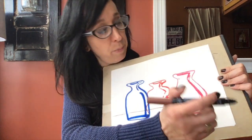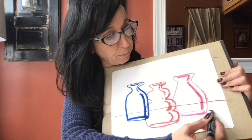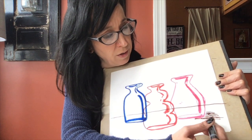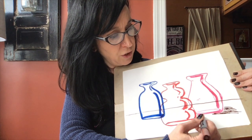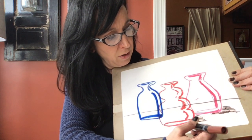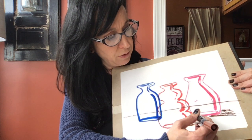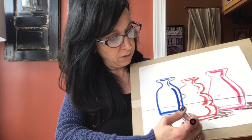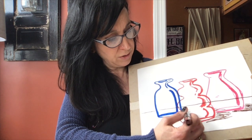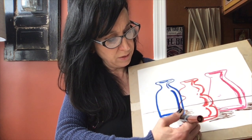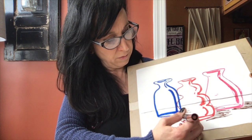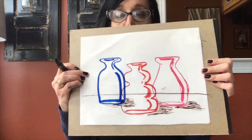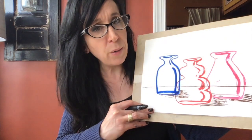I'm going to use my brown marker and just add a little suggestion of cast shadow here, only onto the table surface beneath the edges of where these three vases are sitting. I did it very lightly, but I did add it with just a little bit of brown marker.